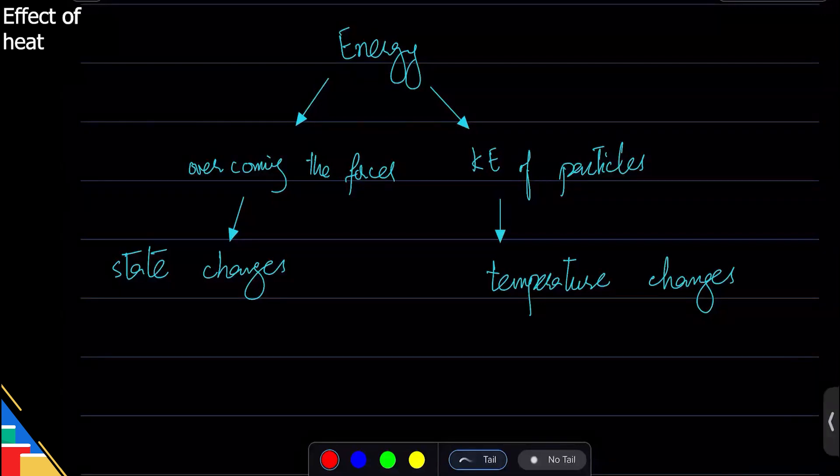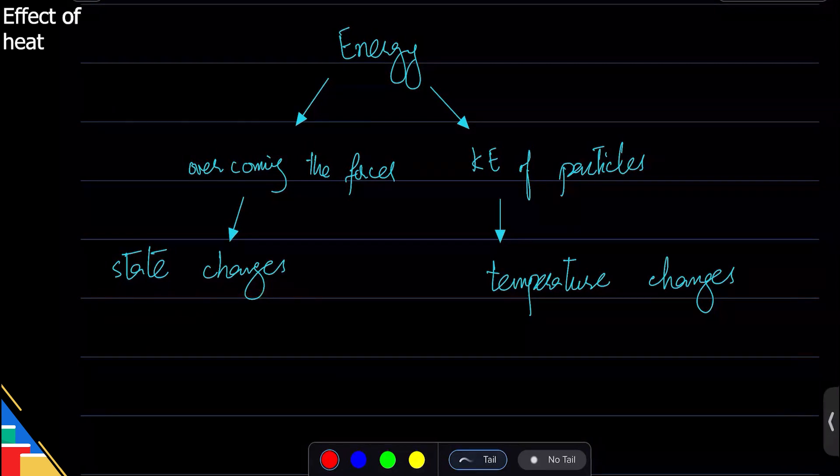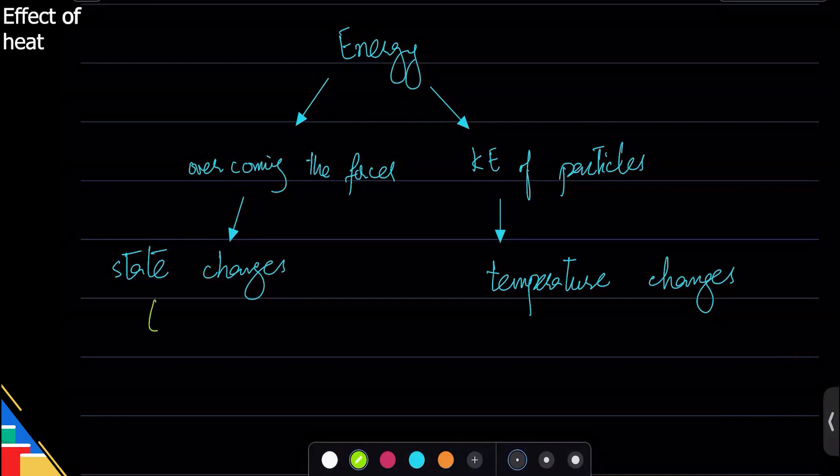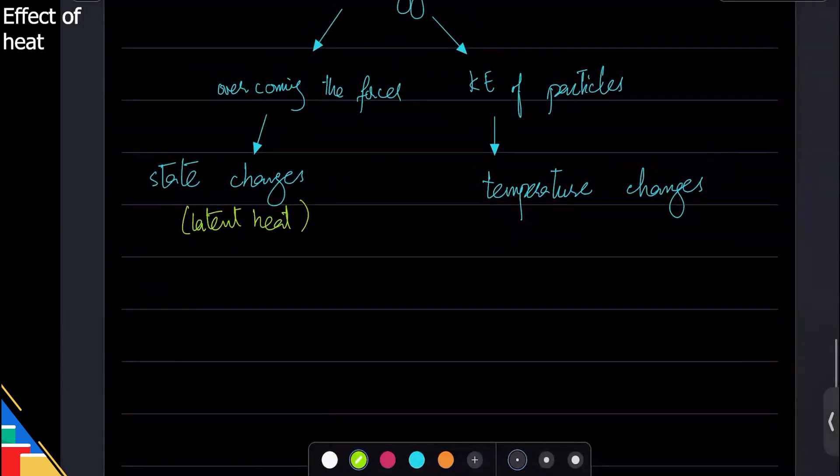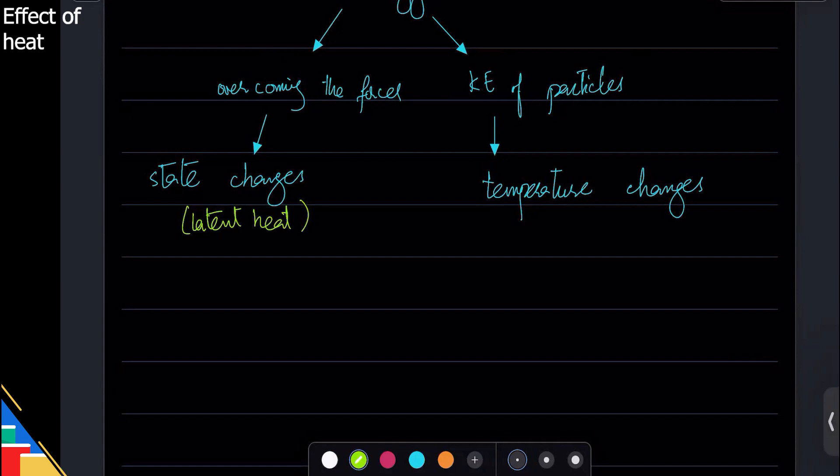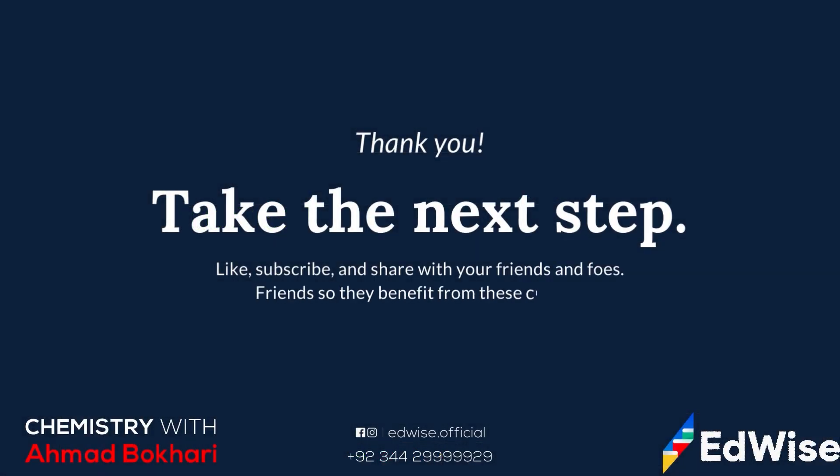This is why this is called latent—it is hidden. Okay, so that's the key idea here: temperature does not change when the state is changing. Why? Because energy is used up to overcome the forces.